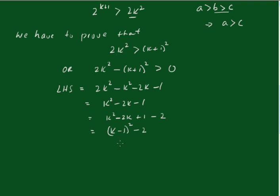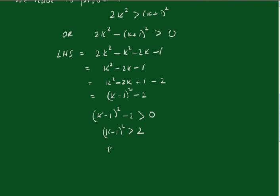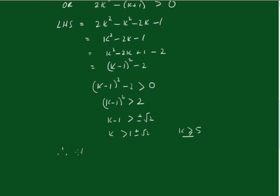Clearly this will be greater than 0 if k minus 1 all squared minus 2 is greater than 0, that is, k minus 1 all squared is greater than 2. Taking the square root of both sides, k minus 1 is greater than plus or minus root 2, that is k is greater than 1 plus or minus root 2. The biggest one is 1 plus root 2. Now k is greater than or equal to 5, so clearly this must be true. Therefore the statement is true.